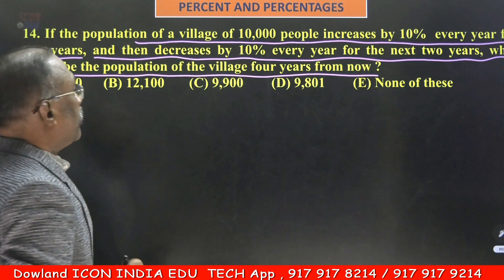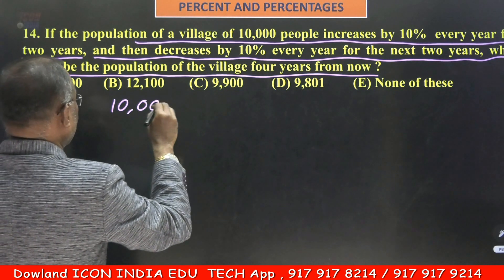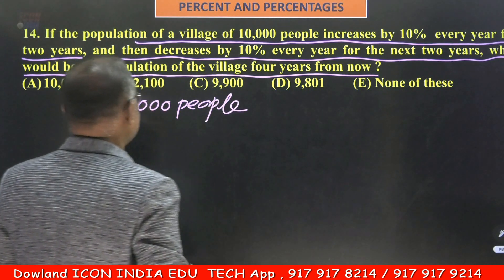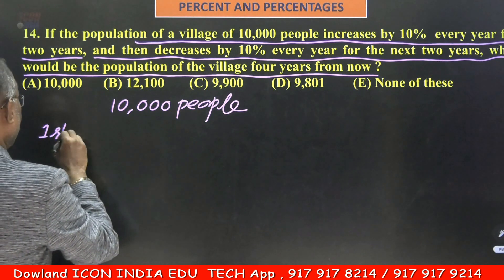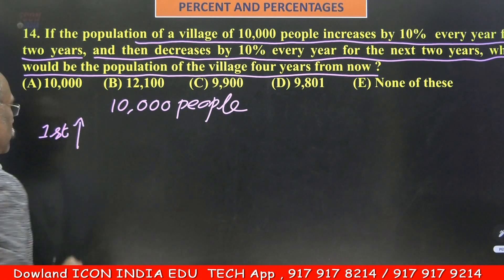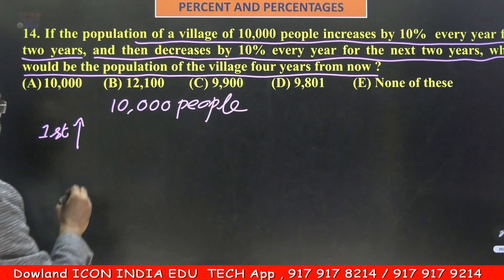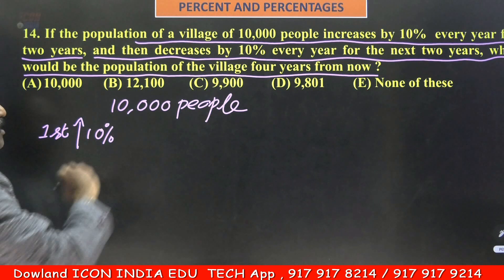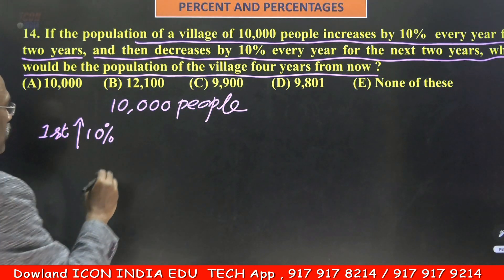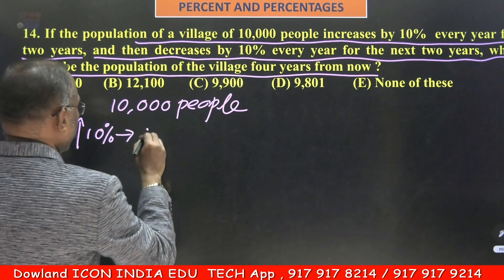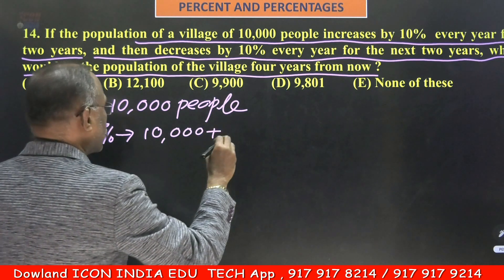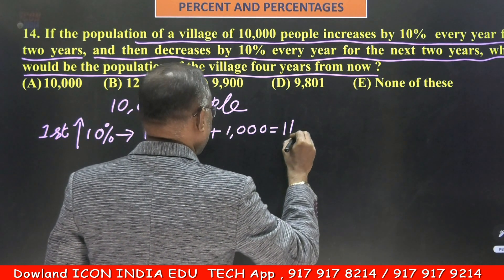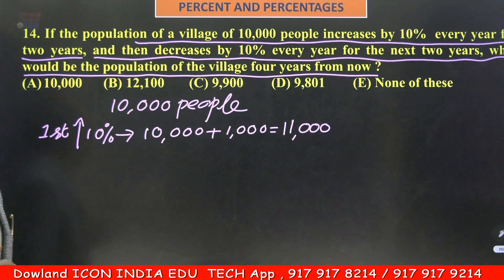10,000 people are there in the village. First year increase — the upward arrow mark means increase. First year 10% up: 10% of 10,000 is 1,000. So 10,000 plus 1,000 equals 11,000. At the end of the first year, the population is 11,000.